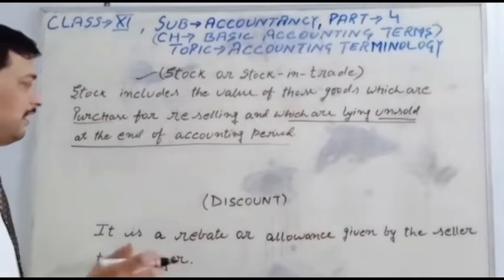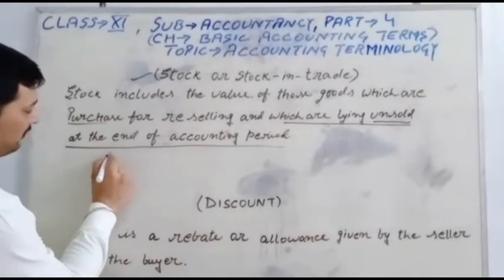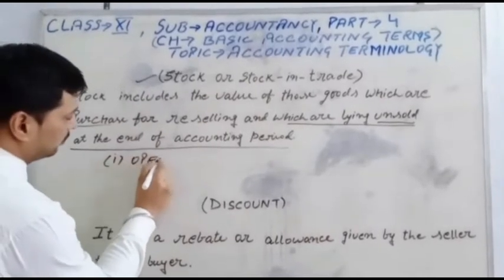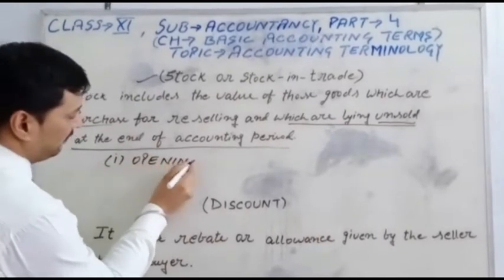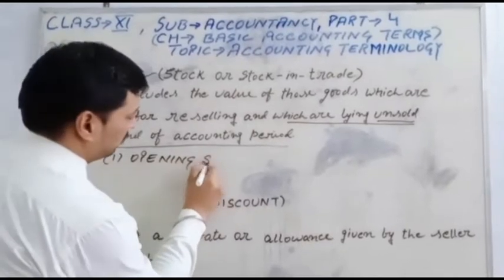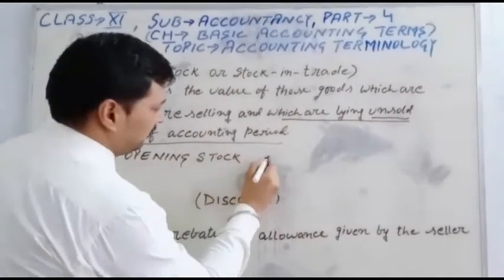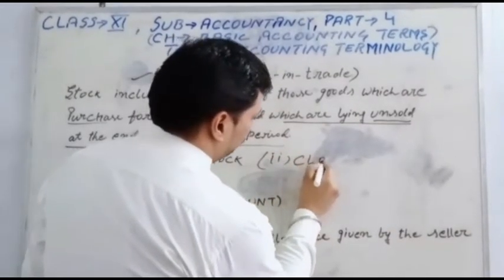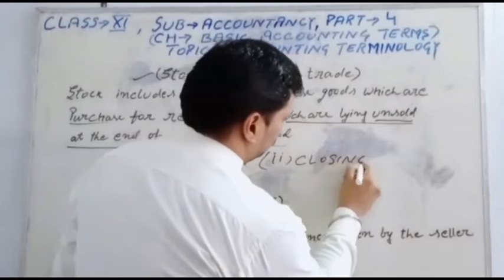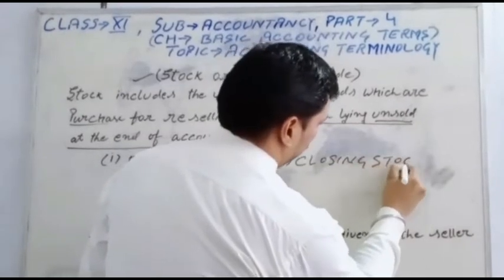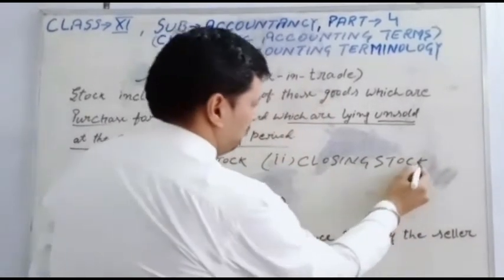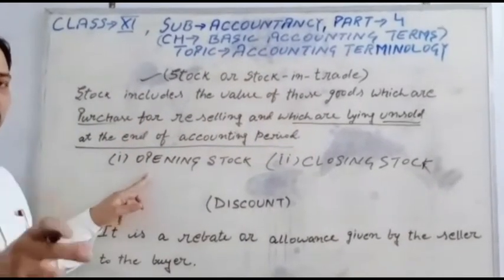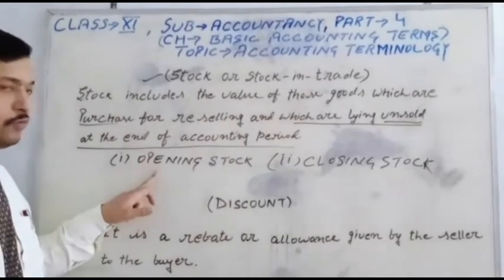That point is clear. And the stock is to be divided into two types: first is the opening stock, and second is the closing stock. If the stock remains at the beginning of the accounting period, it is called the opening stock.